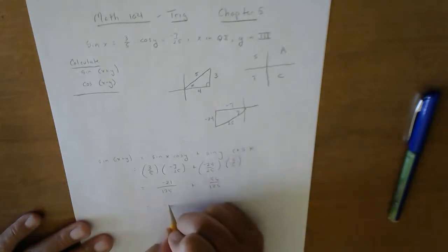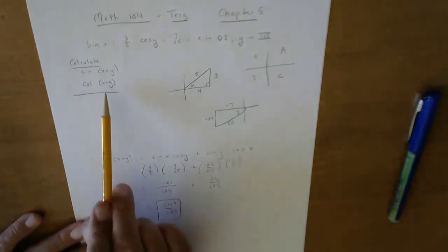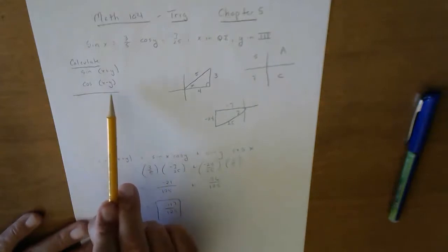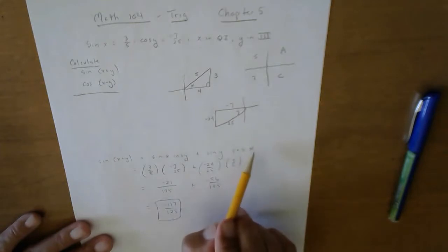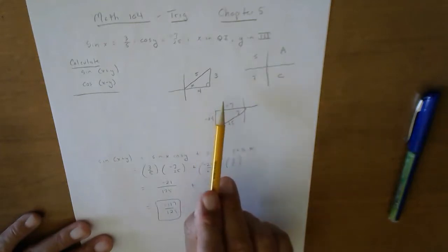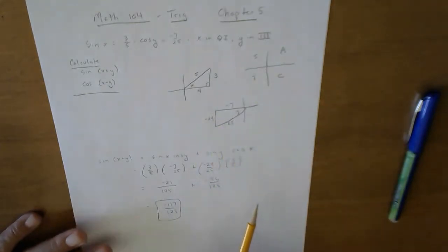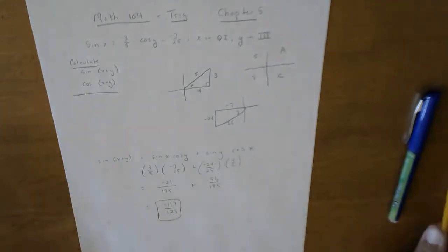Combining these, I get negative one hundred seventeen over one hundred twenty-five. If you then want to find the cosine of a difference, you do the same thing. Expand it using its identity, then go back to the pictures you drew and get the actual values. Hope that helps you.